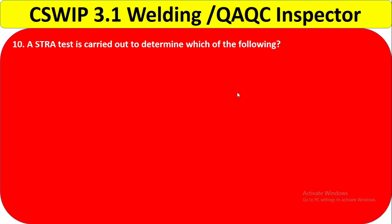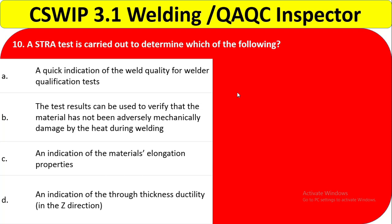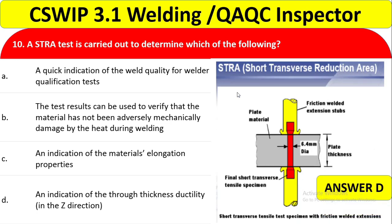Question 10: An STR (Short Transverse Reduction) test is carried out to determine which of the following? Option A — quick indication of weld quality for welder qualification — is incorrect. Option B — verifying material has not been adversely damaged by heat during welding — is also incorrect. Option C — indication of metal elongation property — is different from STR. Option D — an indication of throat thickness ductility — is correct. The STR test checks short transverse reduction area in the through-thickness (Z) direction. Answer is D.